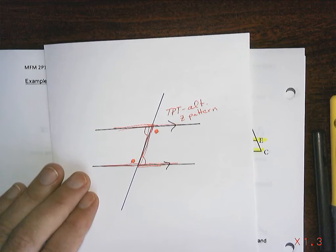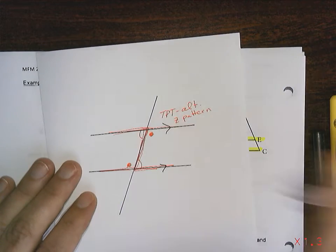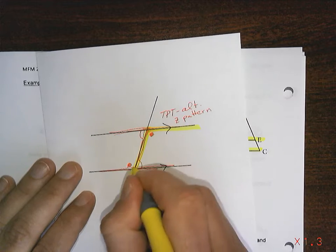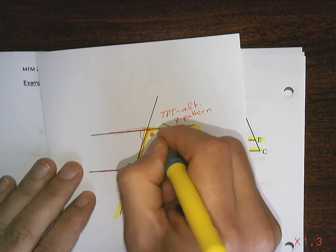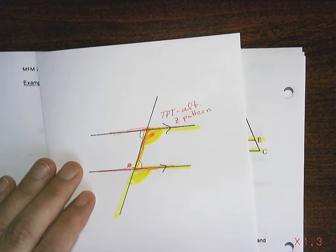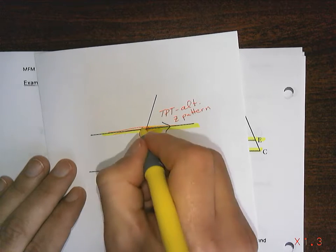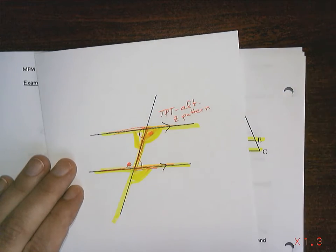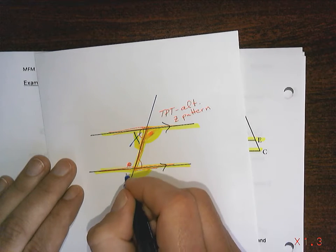Now there's also the F pattern. Remember they taught you to look for an F. There's an F and this angle equals this angle. They also taught you to look for backwards F's. So here's a backwards F which meant that this angle is equal to this angle.